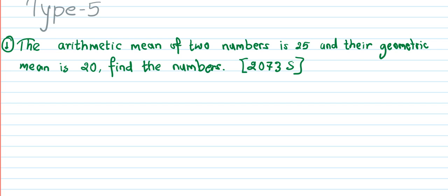Two numbers have an arithmetic mean of 25 and a geometric mean of 20. This is a simple question asking us to find the two numbers. We need to calculate what those two numbers are.